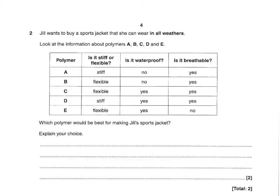Jill wants to buy a sports jacket she can wear in all weathers. Look at the information about polymers A, B, C, D, and E. Which polymer would be best for making Jill's sports jacket? Explain your choice. C would be the choice, but that alone won't get you a mark. For two marks, you've got to list all three properties: you've got to say it's flexible, it's waterproof, and it's breathable.